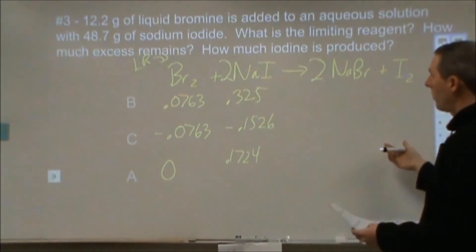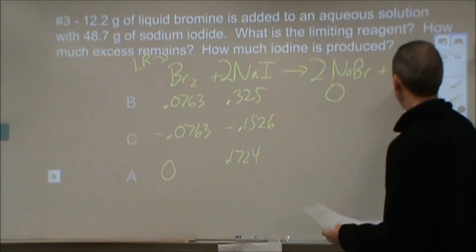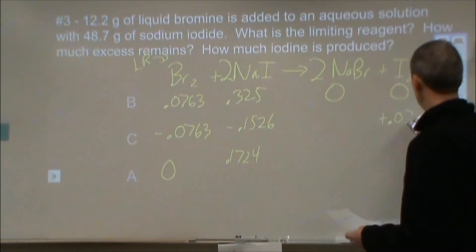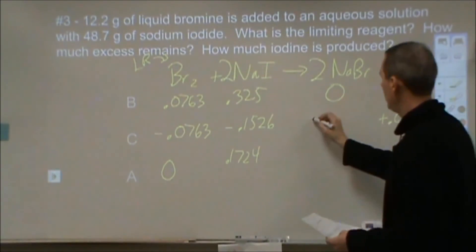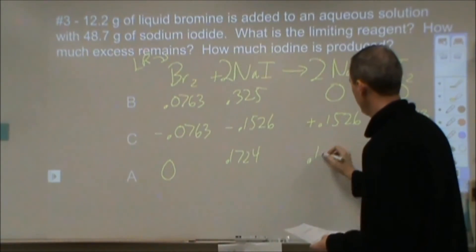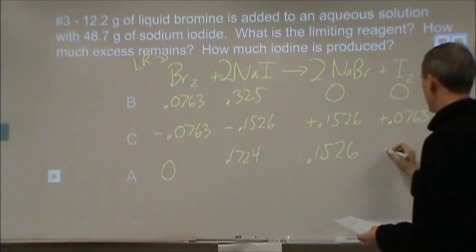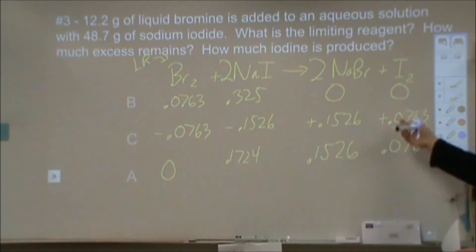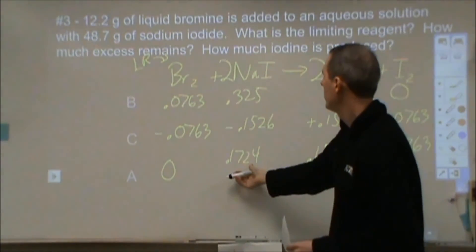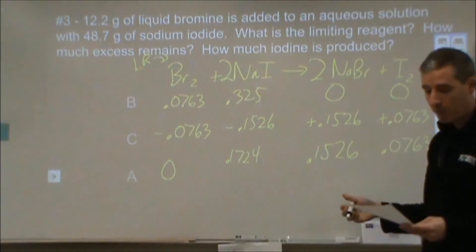Okay, so now we go ahead and do our products. Starting with zero and zero. We're going to pick up 0.0763 moles of this. We're going to pick up 0.1526 moles of this. So at the end of the day, we will have 0.0763 moles of iodine, 0.1526 moles of sodium bromide, 0.1724 moles of sodium iodide remaining.